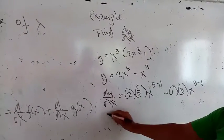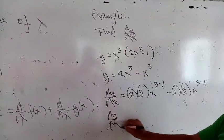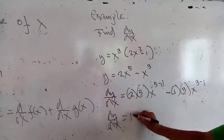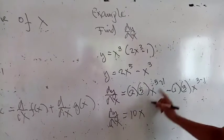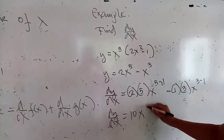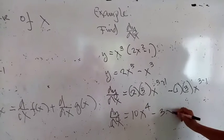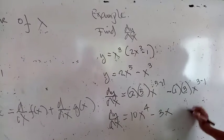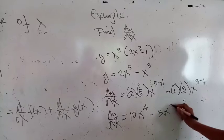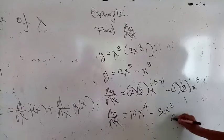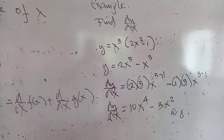In algebra, the derivative of y with respect to x will be: multiply 2 times 5 that would be 10, times x to the 4th power, then minus 3 times 1 is 3, times x to the 2nd power. That is your total answer.